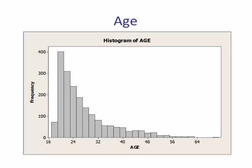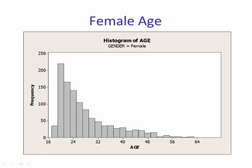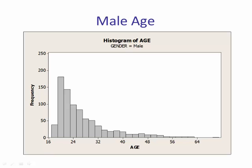Here's an example using the student survey data — the variable age. Clearly, this is skewed right; the right tail is a lot longer than the left tail. If we separate this variable by gender — male and female — let's see if it changes the shape. Here's female ages, and here's males. Both are skewed right. It did not change the distribution when we separated by gender.